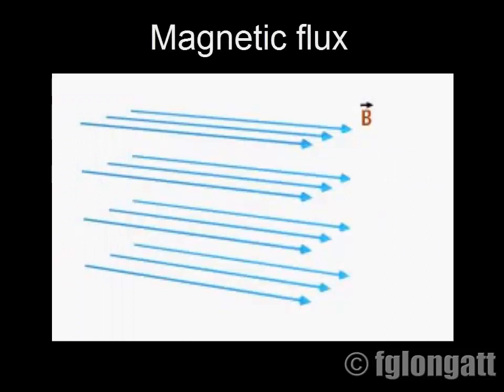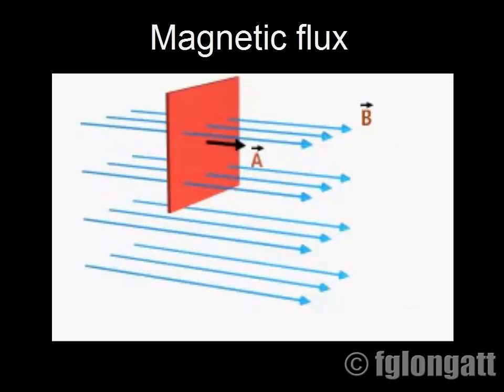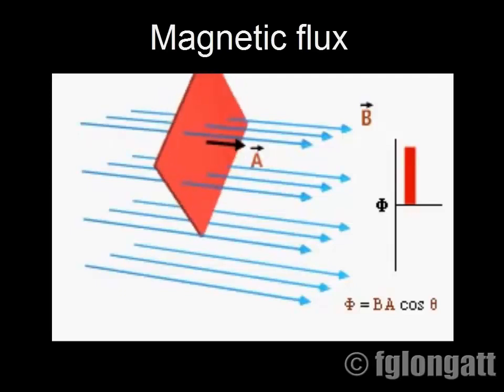When magnetic field lines pass through a flat surface, we can define a quantity called the magnetic flux that represents the number of field lines penetrating it. If the surface is rotated about the field lines, the magnetic flux does not change.